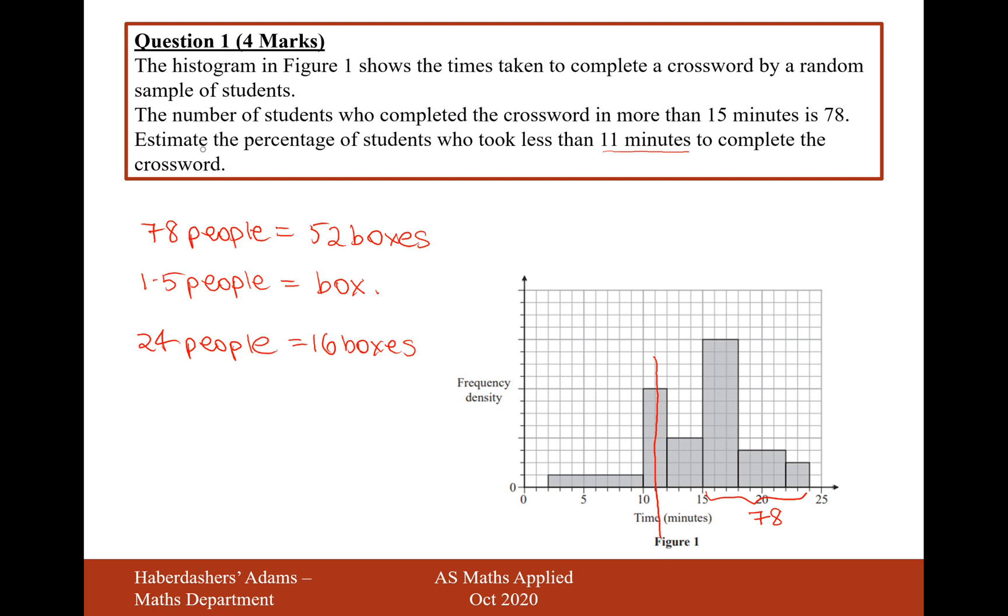And now what we want to do to finish the question is estimate the percentage of students who took 11 minutes or less. So it's going to be these 24 people out of the total. So we have 24 people here. Let's look at how many people we've got here. Counting these boxes: 8, 9, 10, 11... up to 20. So 20 boxes will be worth 30 people. So it's going to be 24 out of 24 plus 30 plus 78.